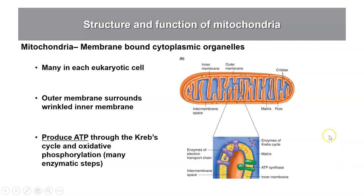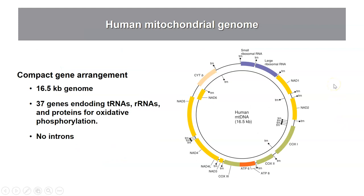Mitochondria are derived from bacteria and became symbiotic with a primitive eukaryotic cell. The mitochondrial genome resembles a bacterial genome — it's circular and very compact, with almost the entire genome made up of genes. These genes are of two main types: they encode proteins, shown in yellow and green here, which are involved in ATP production; or they encode RNAs involved in translation in mitochondria, specifically ribosomal RNAs and tRNAs.